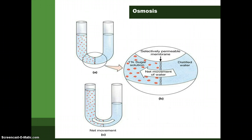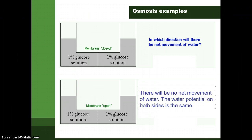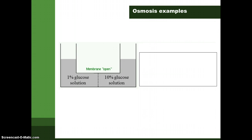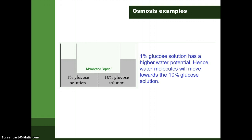As you can see, the water level will move accordingly — the right-hand side water level will drop and the left-hand side water level will rise. In a normal membrane, if both sides of the solution have the same concentration, both are isotonic solutions of the same water potential, and there is no net movement of water molecules. If they are different — for example, a 1% glucose solution has a higher water potential than a 10% glucose solution — water molecules will move from the 1% glucose solution to the 10% glucose solution.